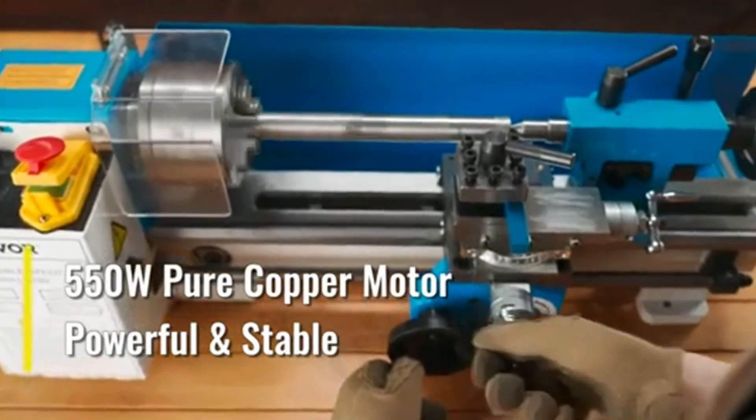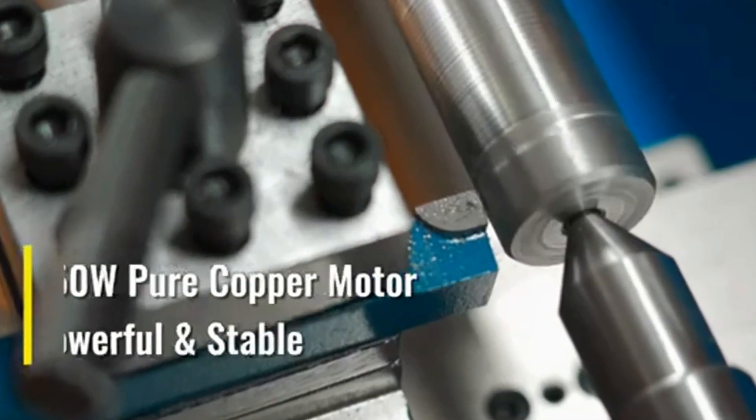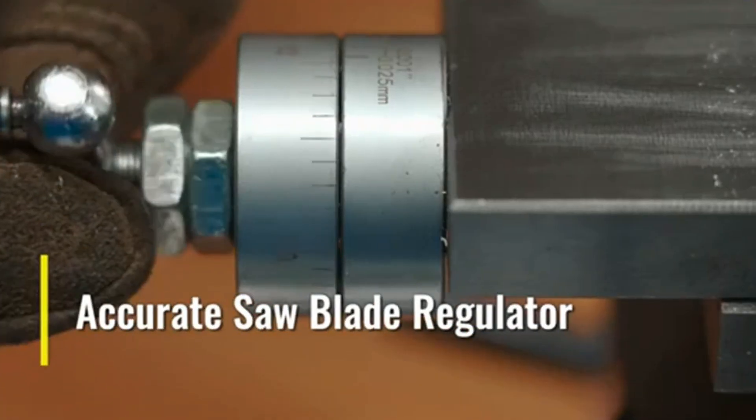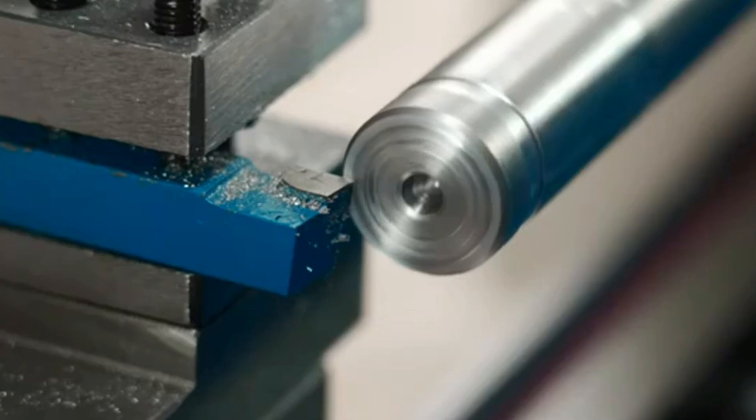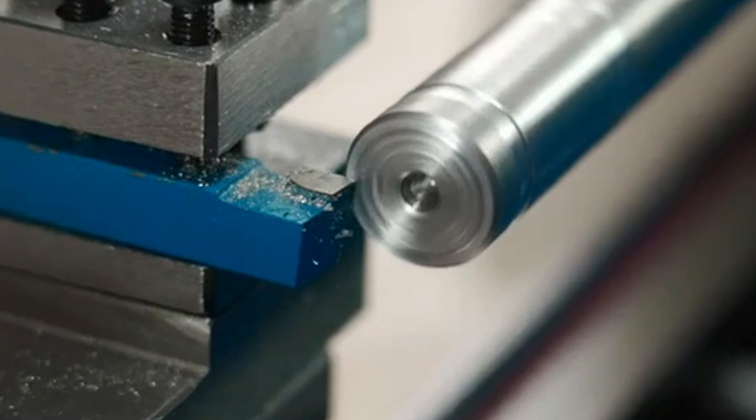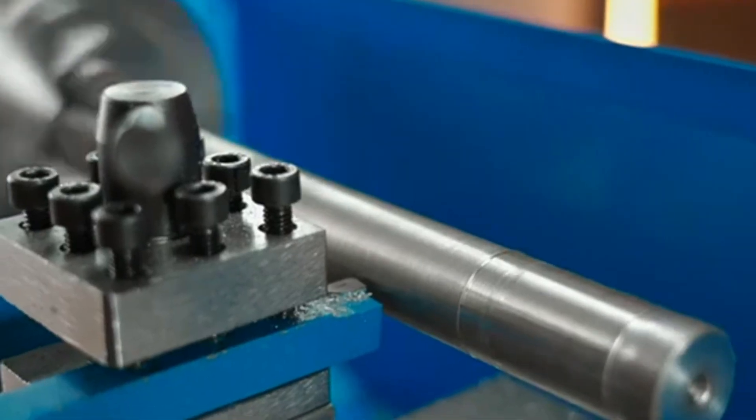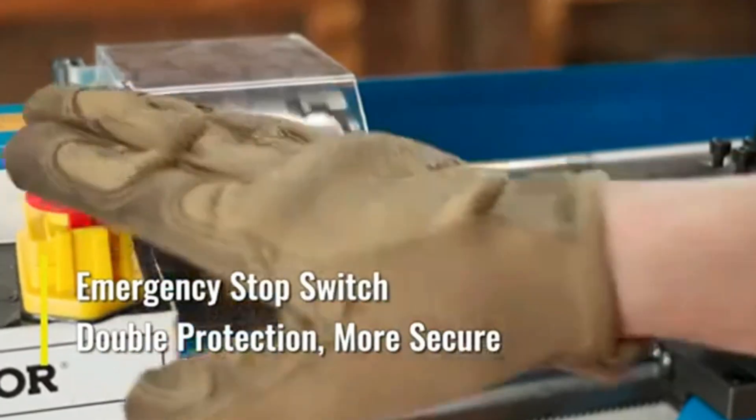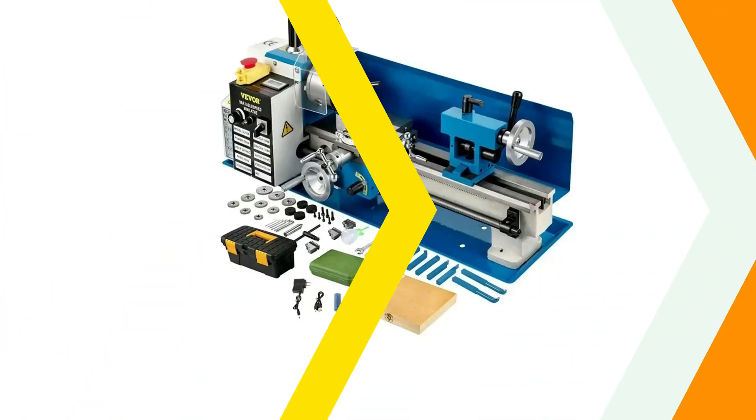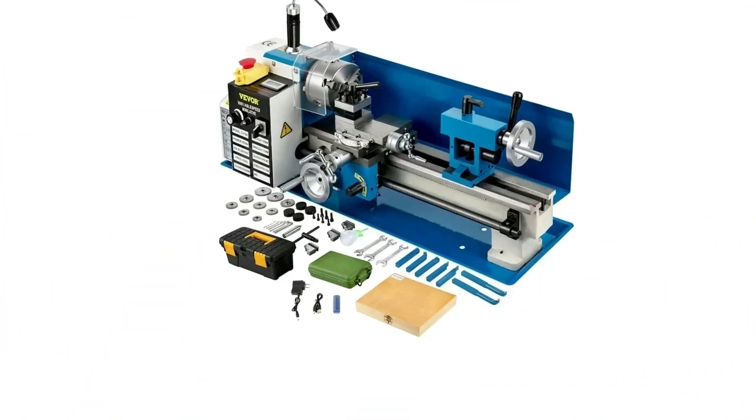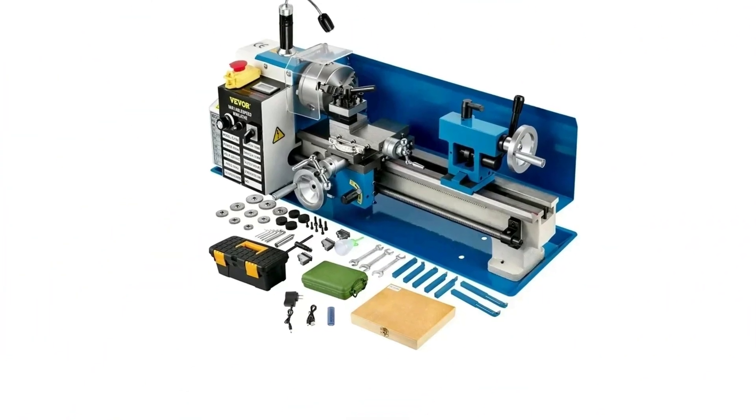Made from high-quality metal, the lathe is durable and designed to last in demanding work environments. Its compact size of 30 inches by 11.8 inches by 11.4 inches and lightweight of 40 kilograms make it ideal for small workshops. The machine is available with different voltage configurations, ensuring compatibility across different markets.